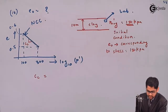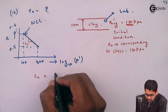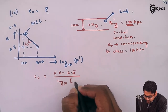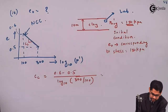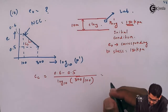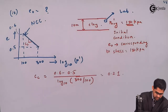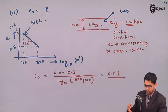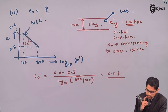For normally consolidated clays, Cc equals (0.6 − 0.5) divided by log base 10 of (300/100), giving Cc = 0.1 / log(3) ≈ 0.209. Cc carries no unit as it is just a slope. I will carry it as 0.21.